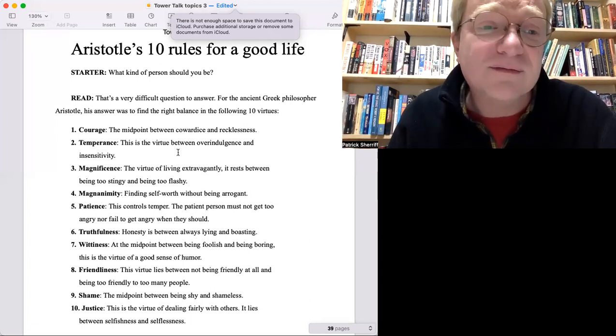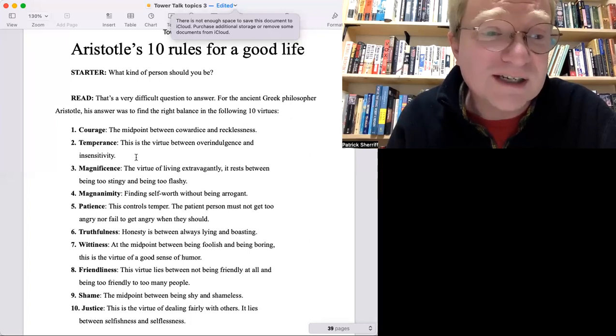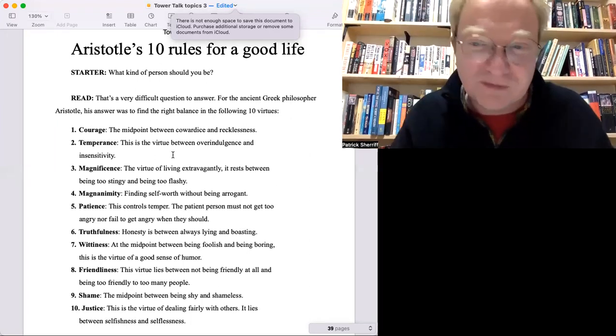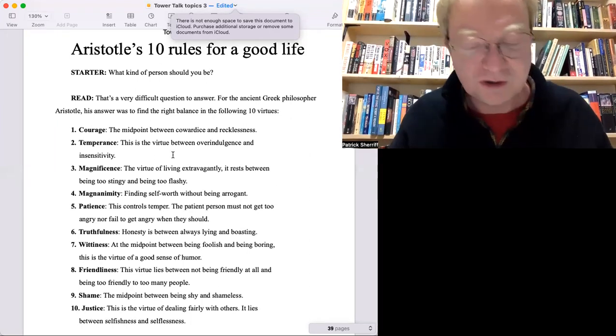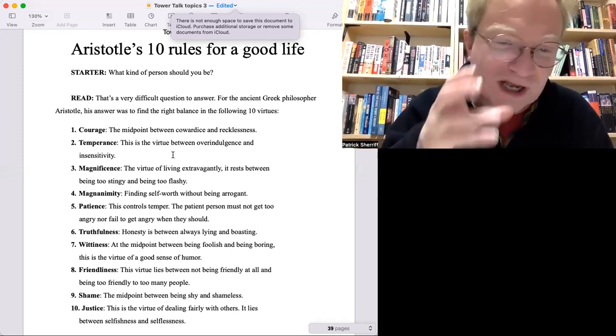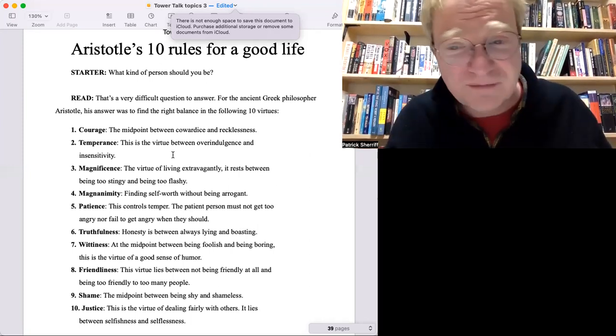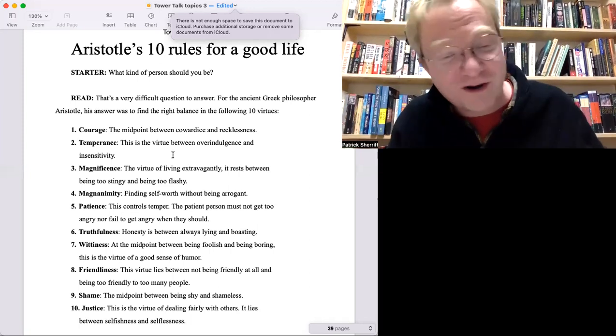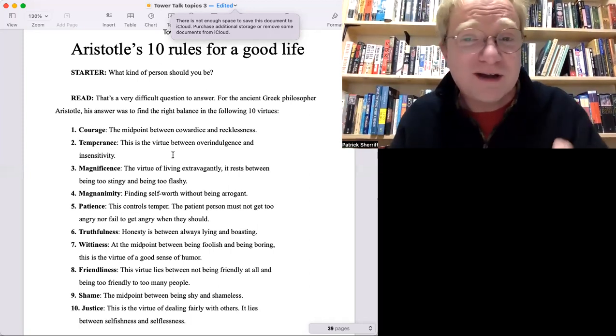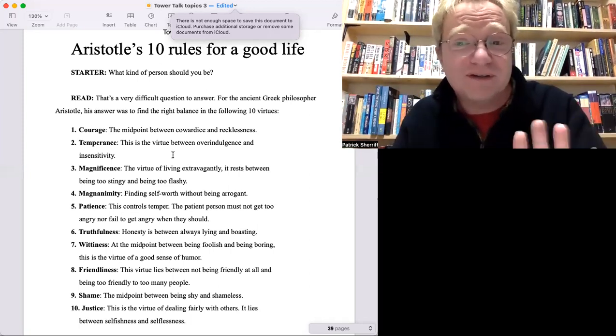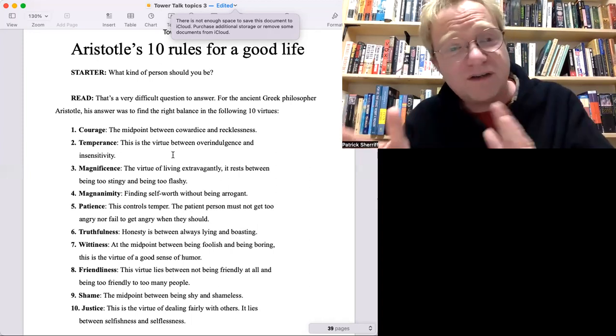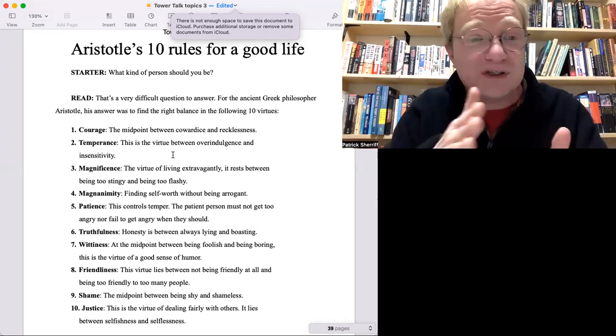The next one: temperance. It says the virtue between overindulgence and insensitivity. That means, for example, if you like wine, that's good. Everybody should try a little bit of wine, but don't drink five bottles, right? Don't go crazy and get very, very drunk. But equally, don't never touch something. So you have to be temperate, modest between the two.